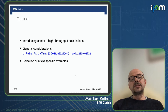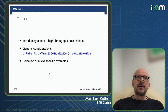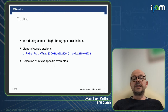Then I'd like to discuss some general considerations. These go back to a paper recently published in the Israel Journal of Chemistry, where I tried to elaborate on how, in principle, uncertainty quantification can be done for quantum chemical problems. Once we've discussed that, I will switch to a few specific examples of what can be accomplished.